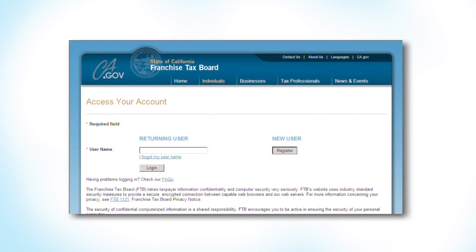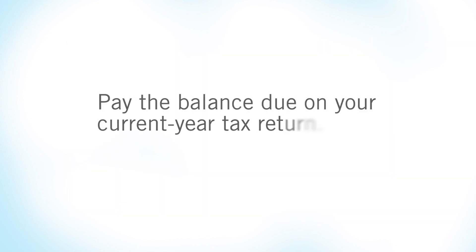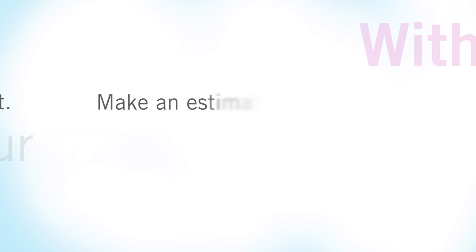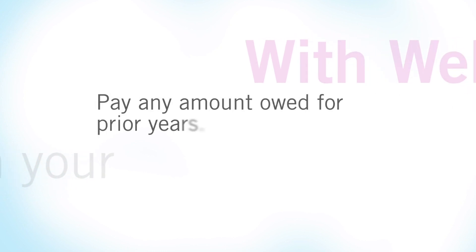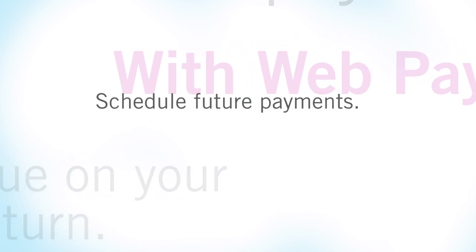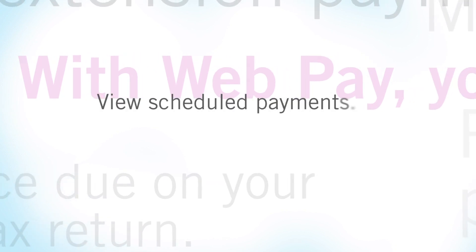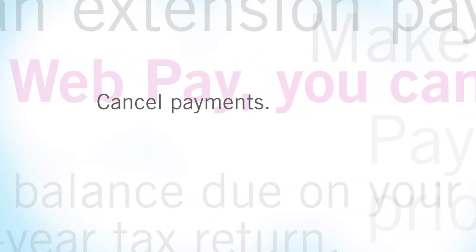Once you're registered, you create your own username and password. Then simply log in and pay the balance due on your current year tax return, make an extension payment, make an estimated tax payment, pay any amount owed for prior years, schedule future payments, view scheduled payments, and cancel payments.